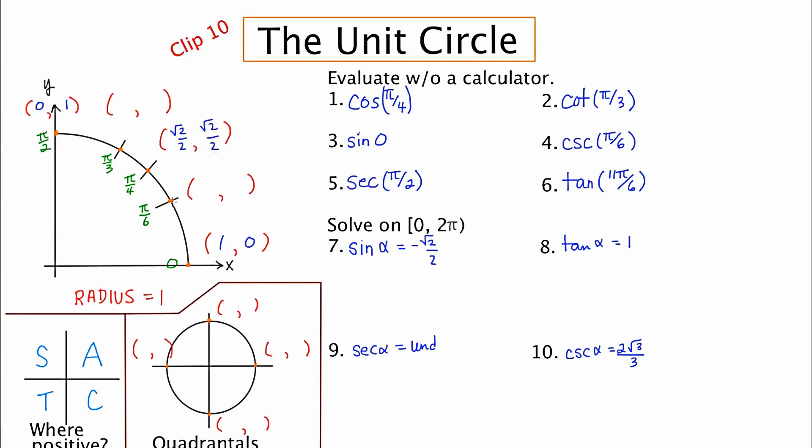And the 30 degree or pi over six, we're going over quite a bit and then we're going up just a little, so this is root three over two and one half. And conversely, 60 degrees, we're going over a little but up a lot. So this is one half and root three over two.